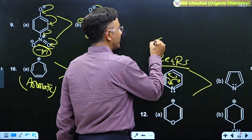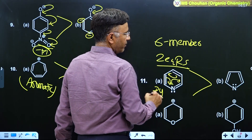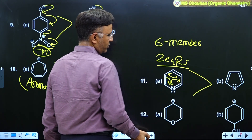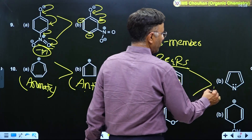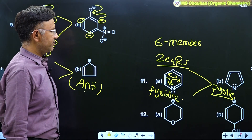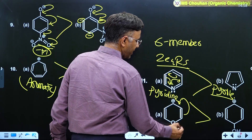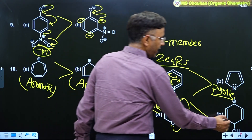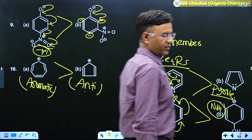Pyridine has more resonance energy than pyrrole because of the six-membered ring and two equivalent RS. In the twelfth example, A is greater than B because of more RS and aromaticity. A is aromatic with a six pi electron loop, while B is sp3 and therefore non-aromatic. So A is greater than B.